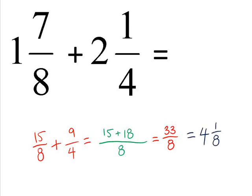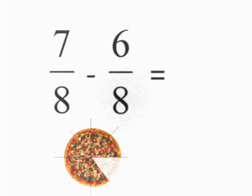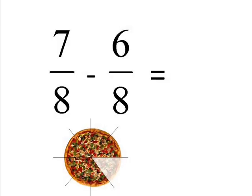Finally, what we're going to have a look at is the idea of subtraction. Now the idea with subtraction is exactly the same. We get an example here of 7 over 8 take away 6 over 8. 7 eighths take away 6 eighths.